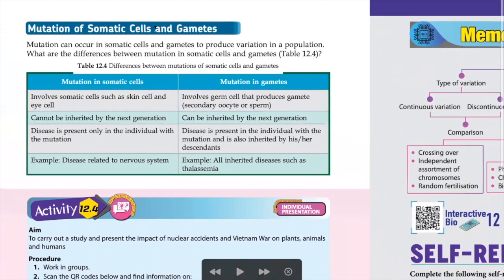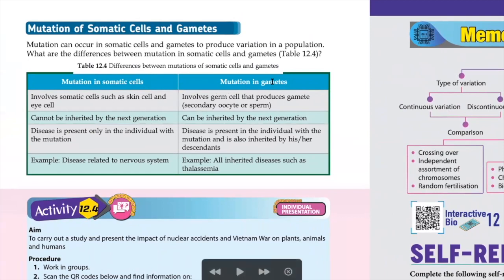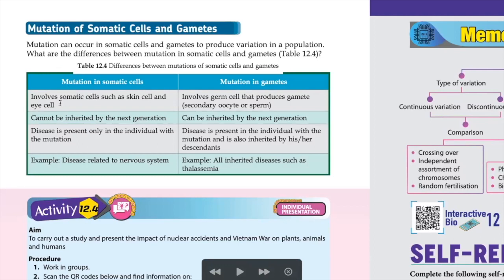Now, mutation on somatic and germ cells. Our cells are of two types: somatic cells and sex cells (gametes). Somatic cells include skin cells, brain cells, red blood cells, muscle cells, and nerve cells. Germ cells (sex cells / reproductive cells) are only two: sperm and ovum. Mutation in somatic cells involves cells such as skin and eye cells. Mutation in germ cells involves cells that produce gametes — sperm and secondary oocyte (ovum). Somatic mutation cannot be inherited by the next generation, but germ cell mutation can be inherited.